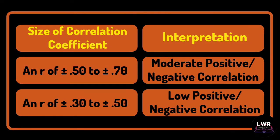An r of positive or negative 0.50 to 0.70 is a moderate positive or negative correlation. An r of positive or negative 0.30 to 0.50 is a low positive or negative correlation.